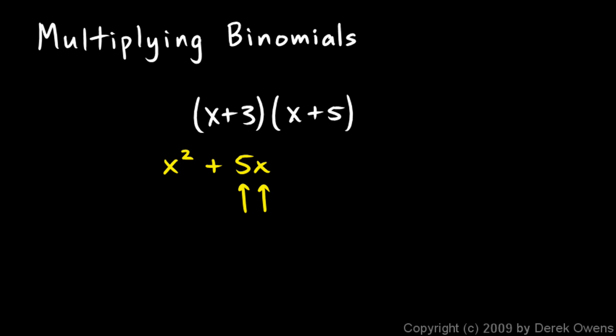Typically write the number first and then the variable. And then I have my 3 times x. So I write plus 3x, and then I multiply the 3 and the 5. So it's plus 3 times 5, which is 15. And I have x squared plus 5x plus 3x plus 15, and the 5x and the 3x are like terms so they can be combined. So I get x squared plus 8x plus 15.